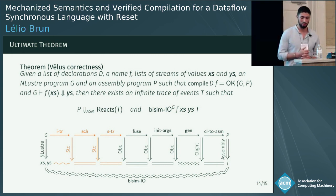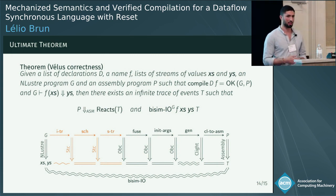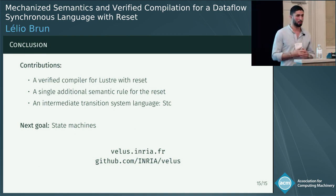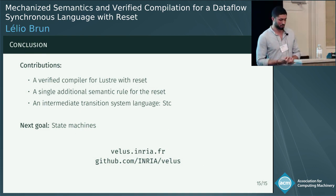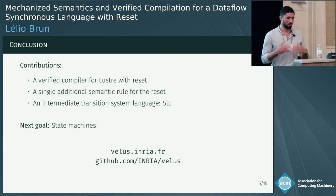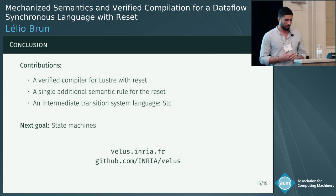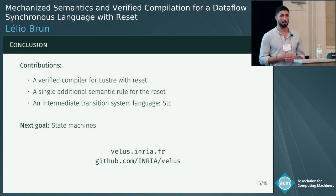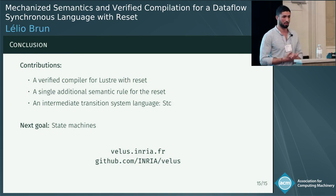The overall correctness proof is a composition of all the pass proofs, with those in black unchanged by the addition of the modular reset. To conclude, I presented a verified compiler for Lustre with reset. We managed to adapt our formalization by adding a single semantic rule for the reset, and we introduced STC, a new intermediate representation that allows us to produce reasonable code for the reset and to model transient states. The modular reset is only the first step towards the mechanization of state machines, which is the focus of ongoing work in the VELUS project.